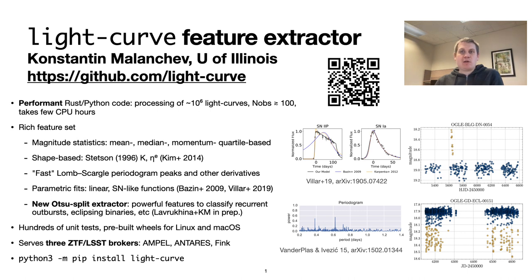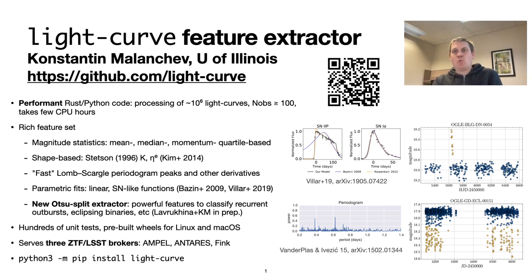It also includes more sophisticated features like peak extraction from Lomb-Scargle periodograms and parametric fits for linear functions and transient-like functions. We also implemented some new features like the otsu split extractor, which is very useful for classifying recurrent outbursts versus eclipsing binaries.